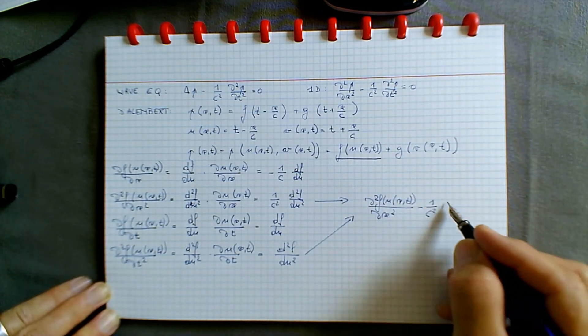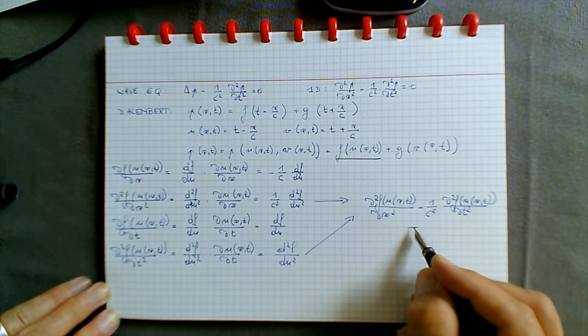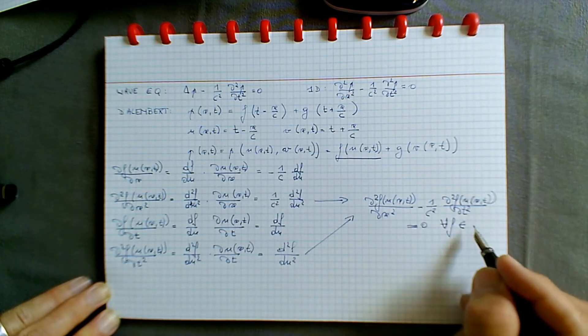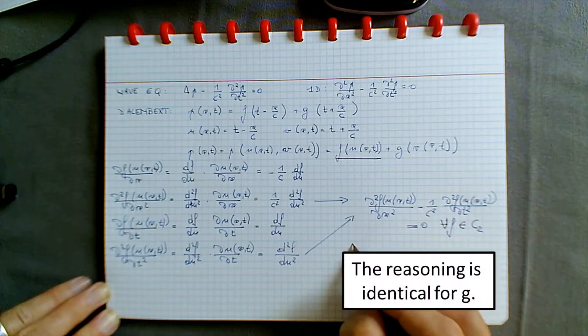We can see that the second derivative of f with respect to x minus 1 over c squared times the second derivative of f with respect to time is indeed equal to zero, for any sufficiently differentiable function f. The same holds exactly for g. We have thus demonstrated the D'Alembert general solution to the 1D wave equation.